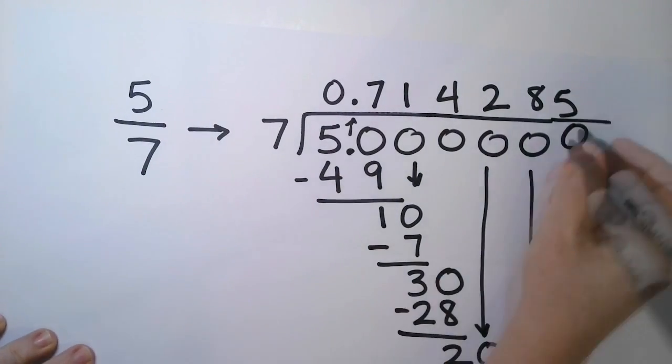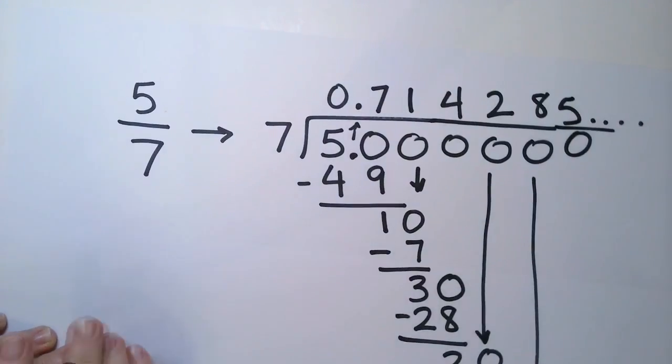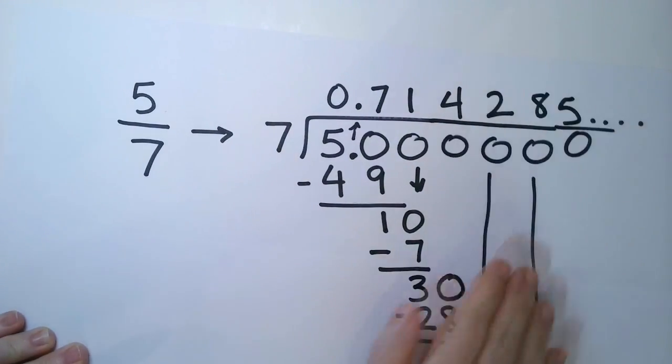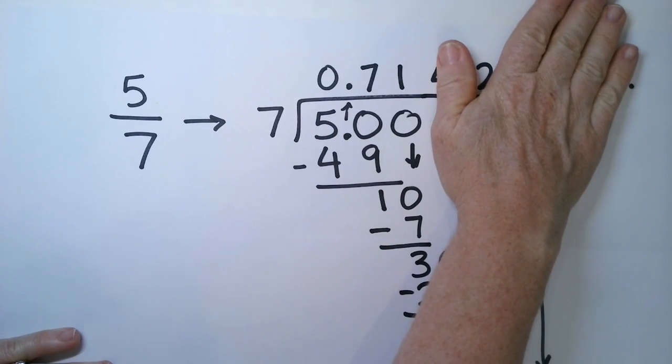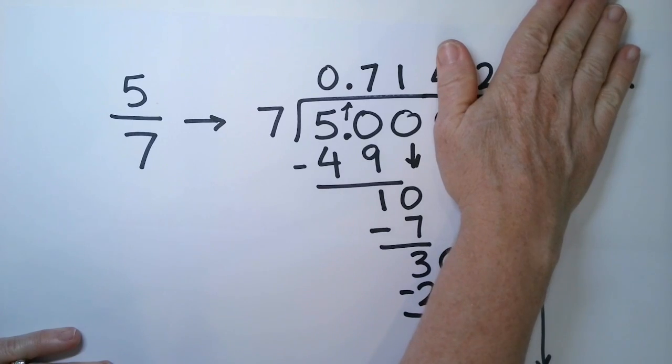And so this goes on and on and on. So you can truncate it as much as you need to. Say you just need one decimal place or two decimal places. Then you can just do that and call it a day and say 5 sevenths is about 0.71.